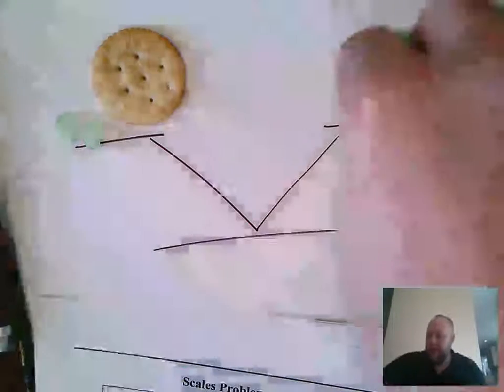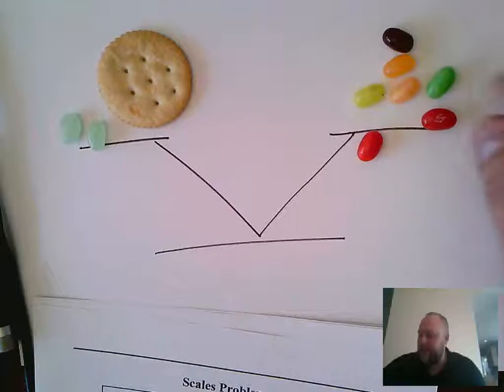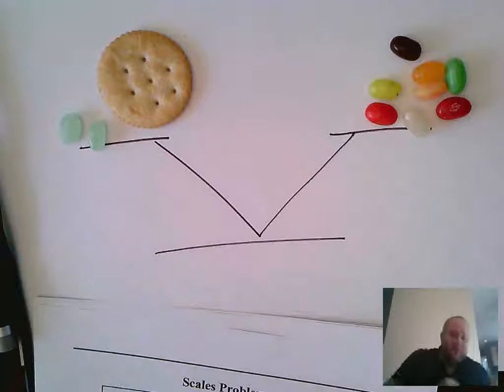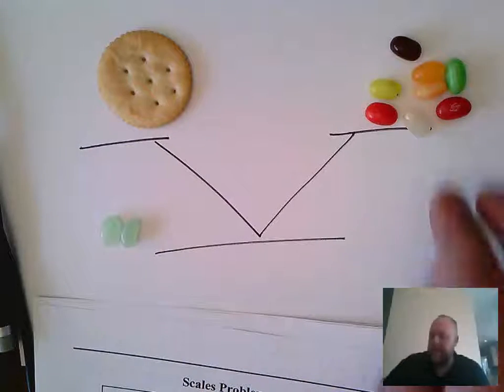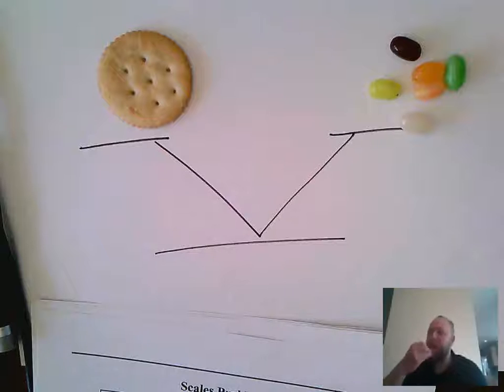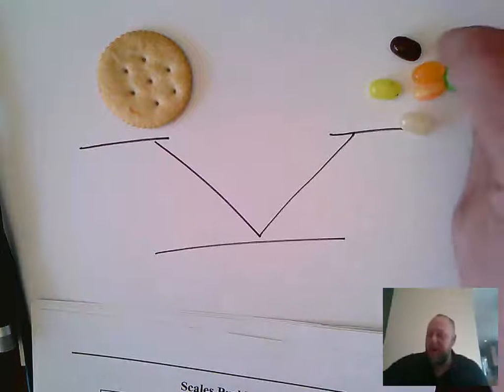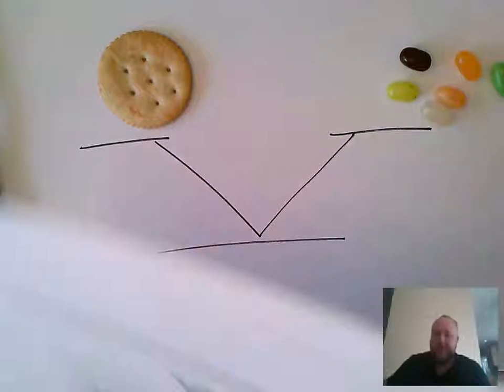I'm trying to figure out what one cracker, how many jelly beans that's equal to. So two, four, six, seven, eight. Well I'm going to take these two jelly beans away from over here and I'm going to take these two away from over here. I'm not going to take them away, I'm just going to eat them. So I know that one Ritz cracker is equal to two, four, six jelly beans. So I would say that the square is equal to six.